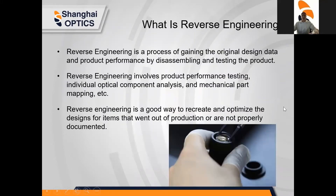Reverse engineering really consists of three different elements. It's a process of gaining the original design data and product performance by disassembling and testing the product. Reverse engineering involves product performance testing, individual optical component analysis, and mechanical part mapping. It's a great way to recreate and optimize designs for items that went out of production or are not properly documented.